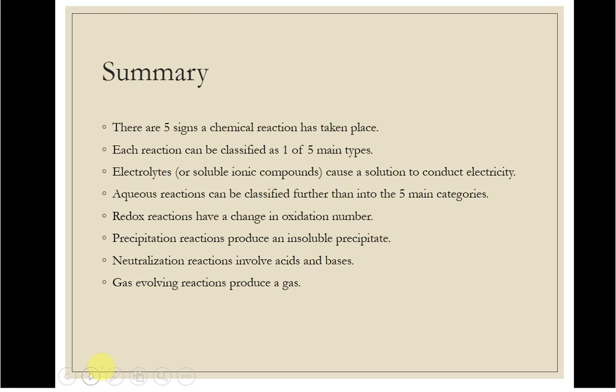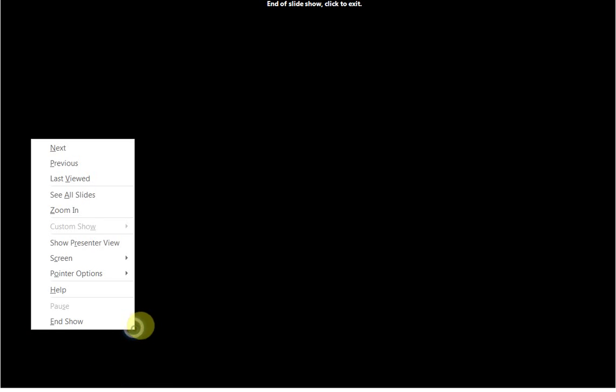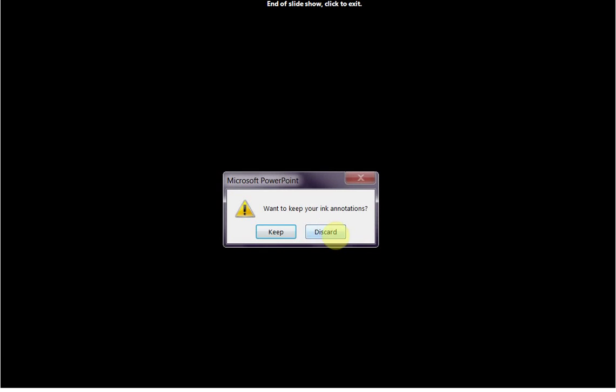So, for this unit, we talked about the five signs of chemical reaction. We talked about how to classify them. We talked about electrolytes and solubility rules. We talked about water as a solvent, why it works, and what it does. We talked about redox reactions, precipitation reactions, neutralization reactions, and gas evolving. So, it's a lot of information, but let me know if you need anything.